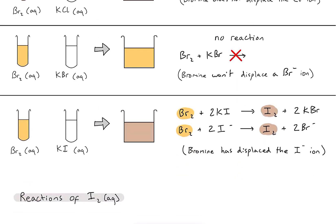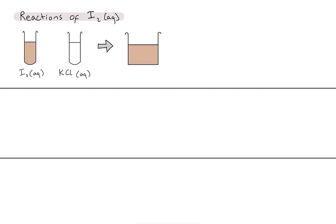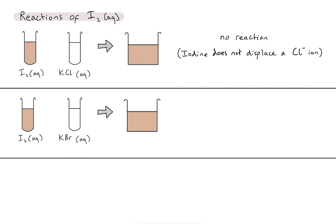The final set of reactions is iodine solution. Taking iodine and potassium chloride — it doesn't look like anything's changed, we've still got that brown colour, so no reaction has occurred and we can't write a chemical equation. Iodine does not displace a chloride ion, so iodine must be less reactive than chlorine. Second example, iodine and potassium bromide — again no reaction has occurred, the iodine does not displace the bromide ion, so iodine must also be less reactive than bromine.